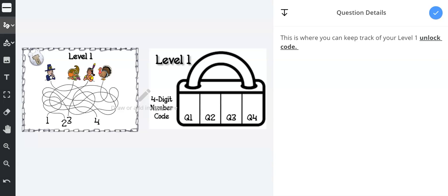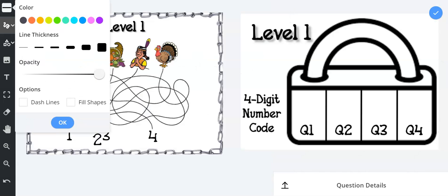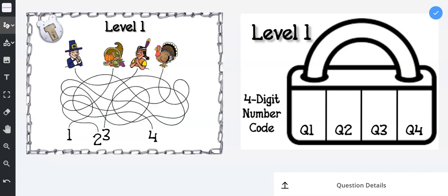And I need to follow. Let me choose a different color so you can see it. I need to follow the route from the turkey to its corresponding number.